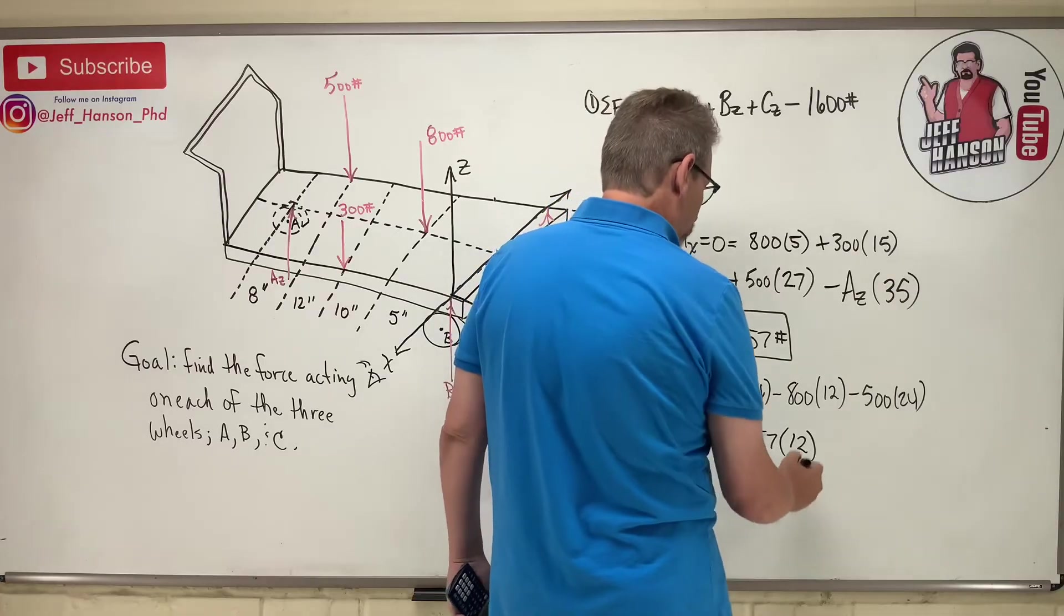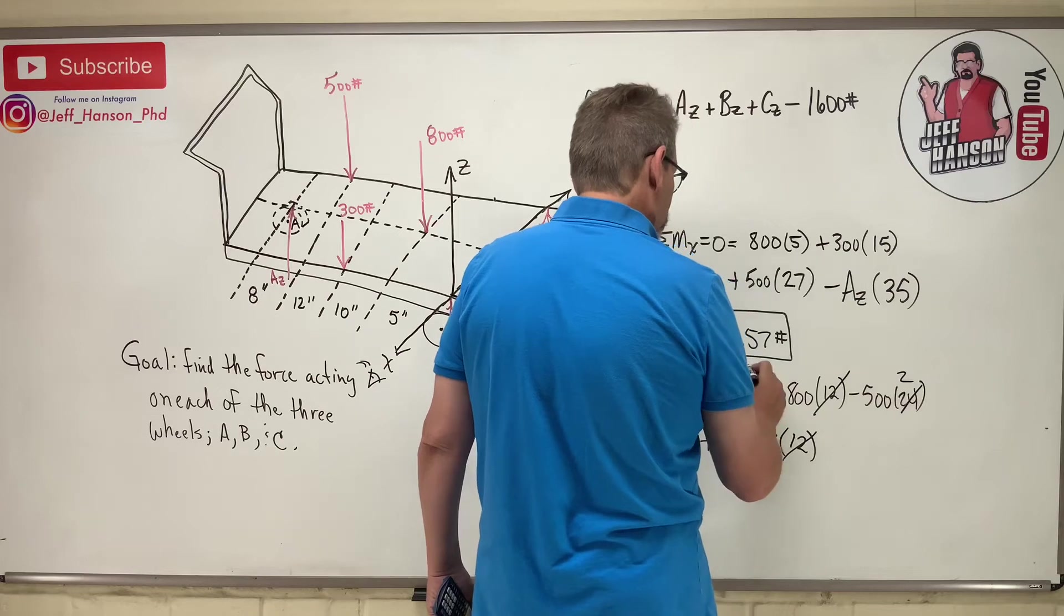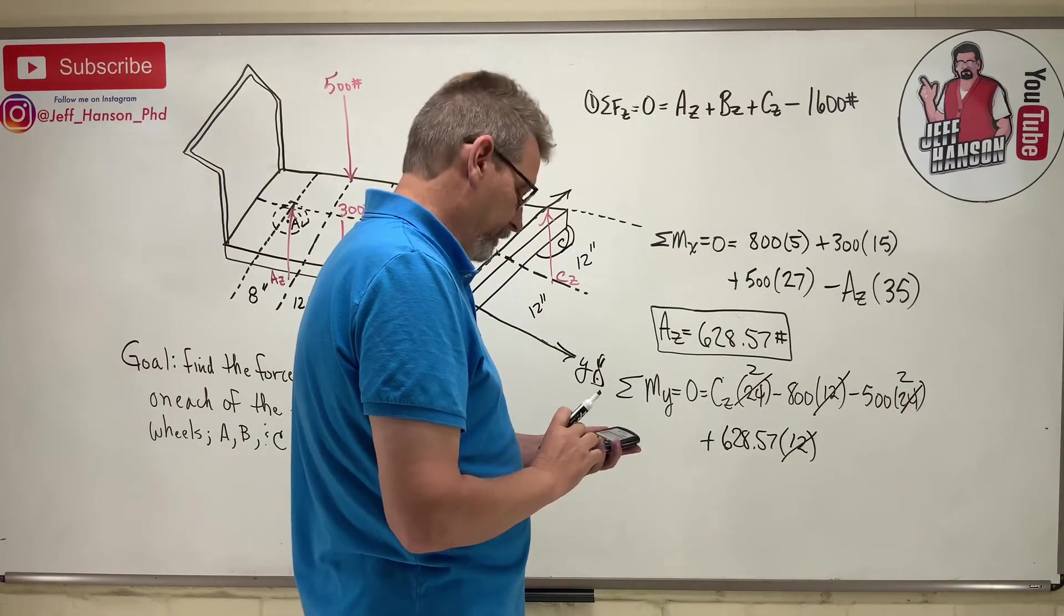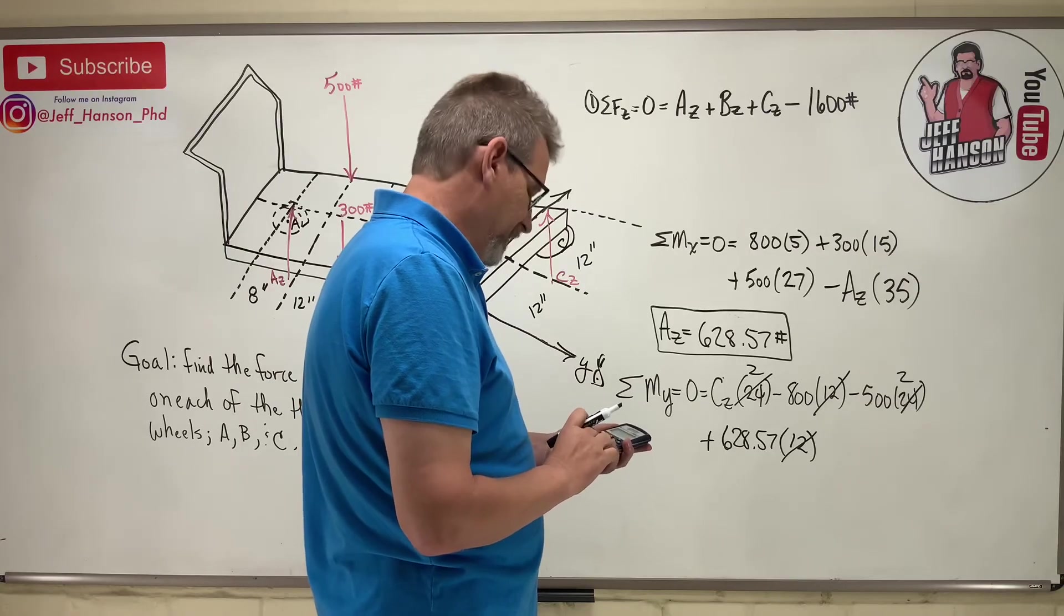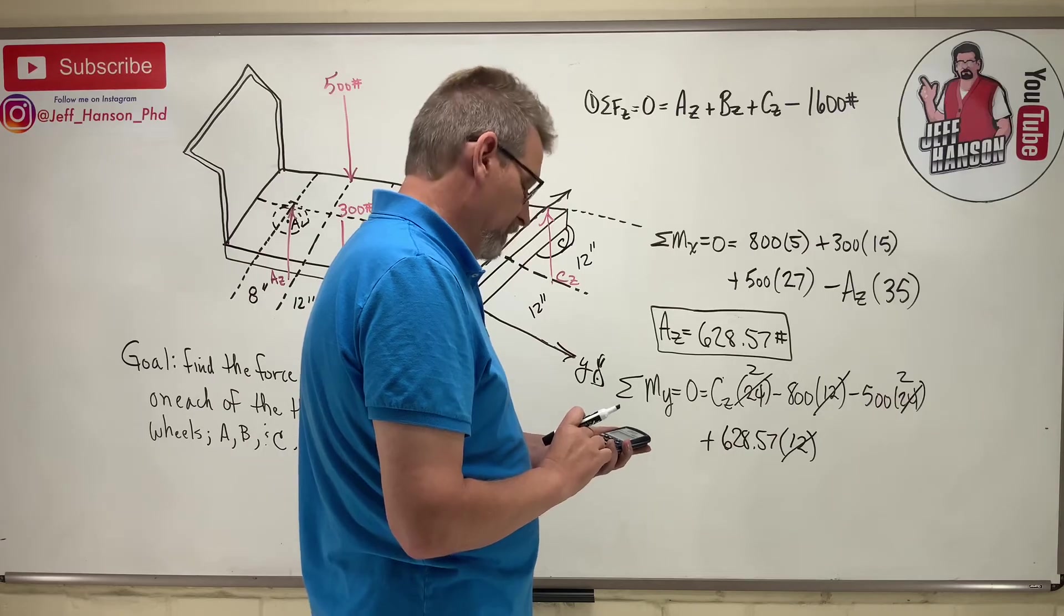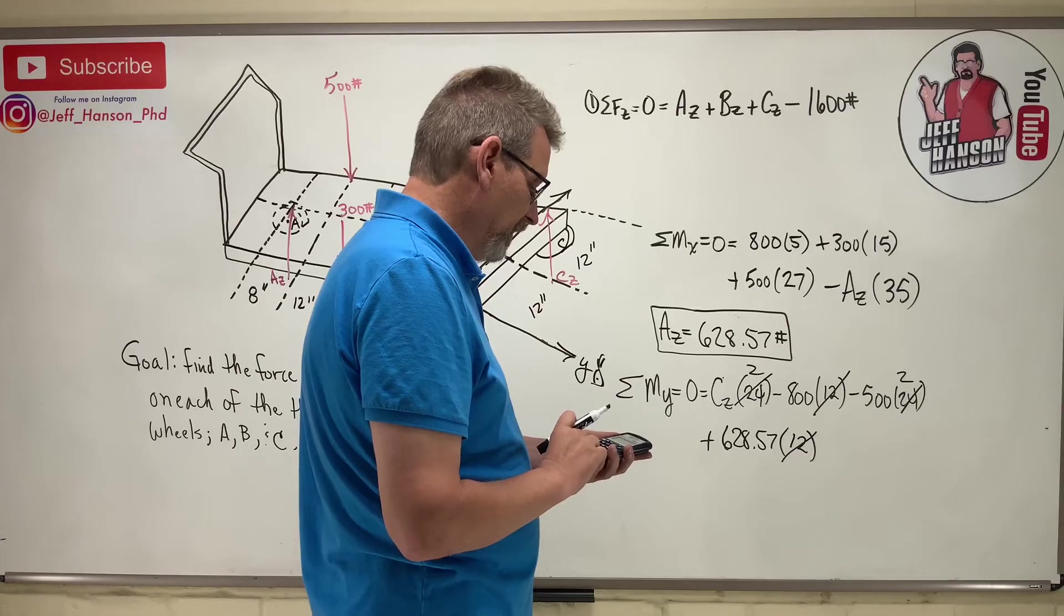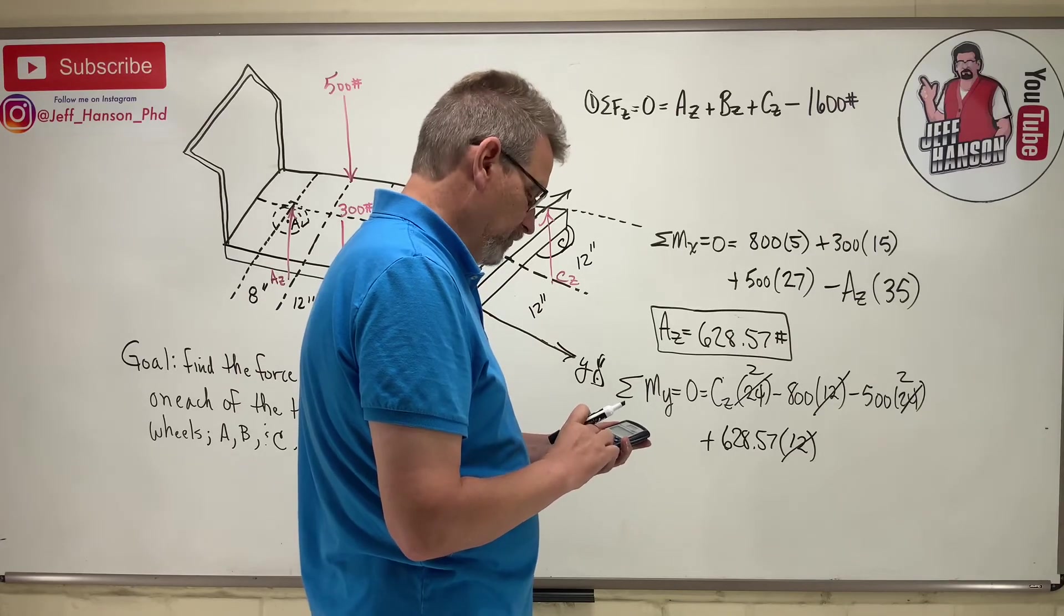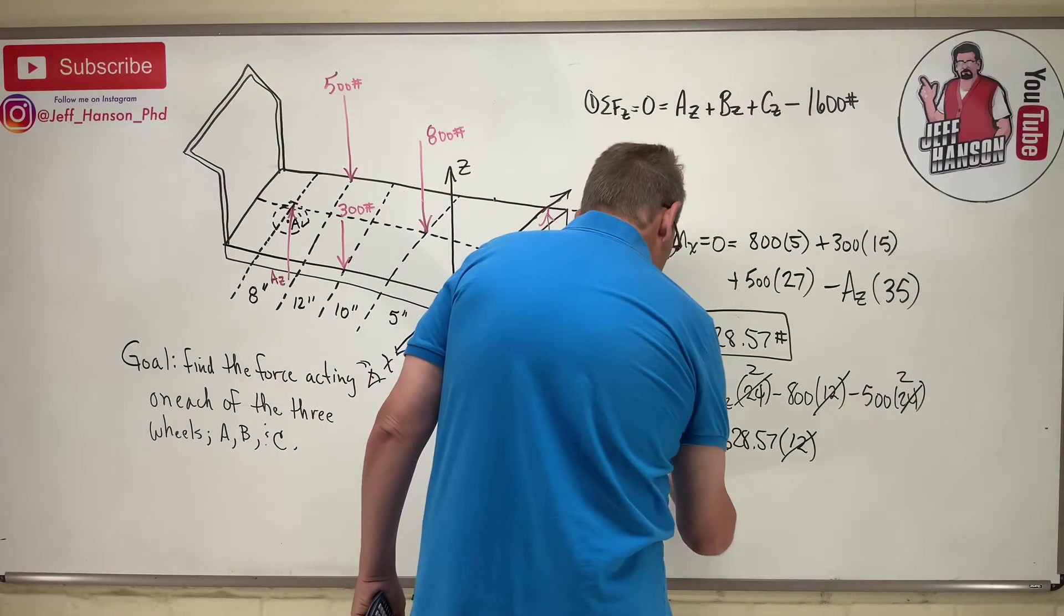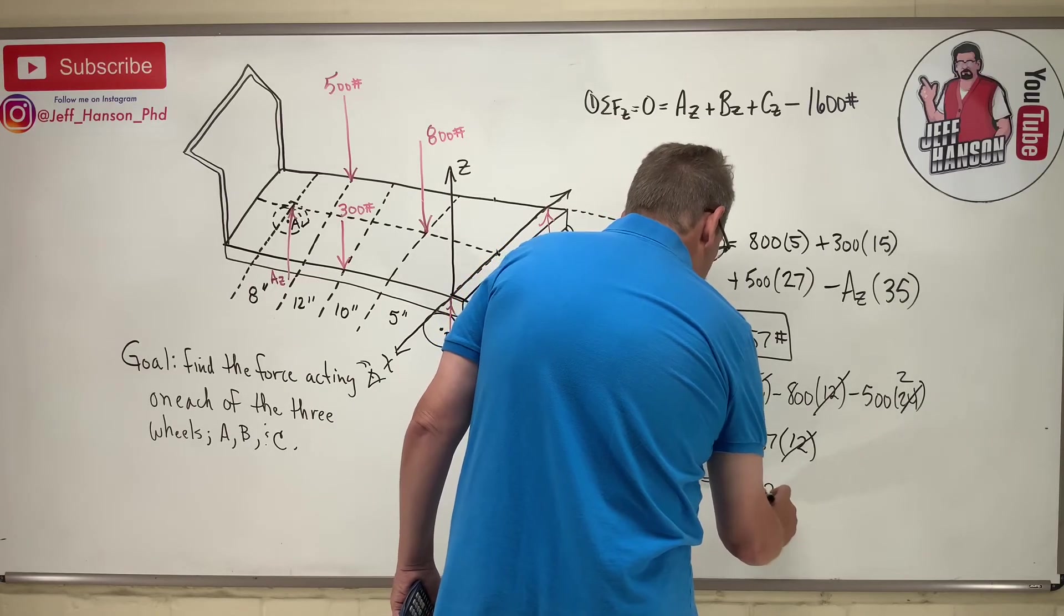Okay, now just to make it easier on us, just to put in our calculator a little quicker, let's divide everything in here by 12. So I got 800 minus 628.57 plus a thousand equals 2Cz. Cz equals 585.72.